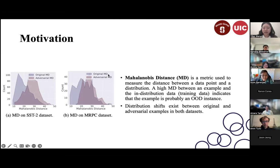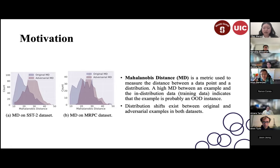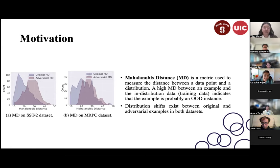Besides score-based metrics, we also visualize the distribution of the embedding-based Mahalanobis distance, which measures the distance between a data point and a distribution. We measure the distance between original or adversarial data and the training data. The visualization shows original data is closer to training data while adversarial data is farther, confirming a clear distributional distinction. We use BERT embeddings from the same model for this calculation.